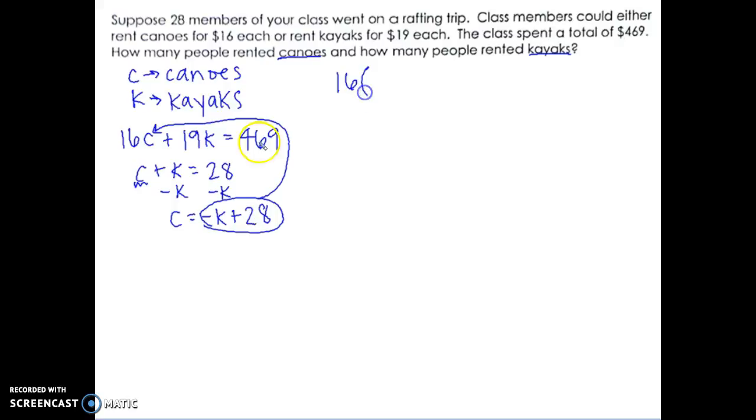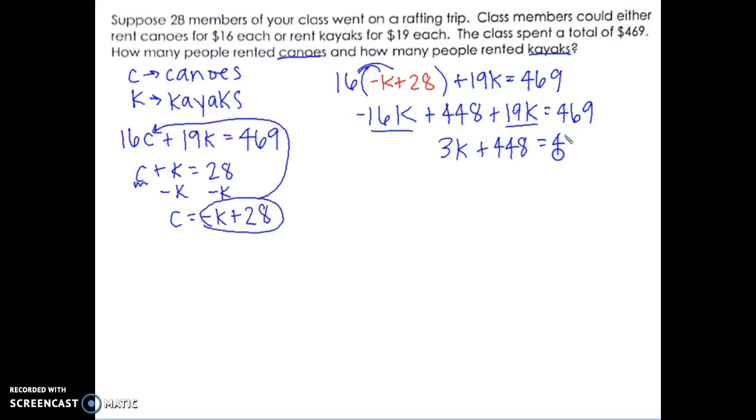So now I have 16 times negative K plus 28 plus 19K equals 469. I'm going to distribute: 16 times negative K plus 28 gives us negative 16K plus 448 plus 19K equals 469. I'm going to combine like terms. I've got negative 16K and 19K to get 3K. Then to solve for K, I'm going to subtract 448 from both sides, so I get 3K equals 21. Then divide by 3, so K equals 7.